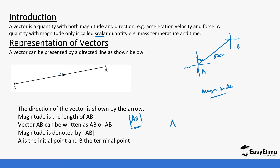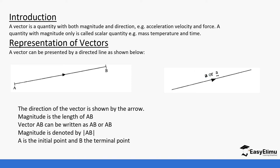Vector AB can be written as AB in bold, or AB using an arrow above it. These are some of the ways we represent vectors, and you will see these variations as we dig deeper into the topic. A is the initial point and B is the terminal point. A vector can also be represented using a lowercase letter, such as 'a', using the initial point.